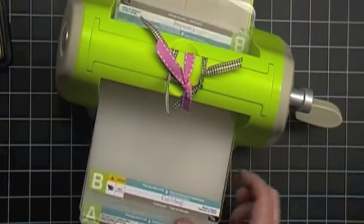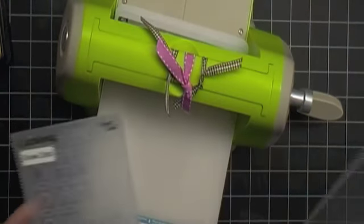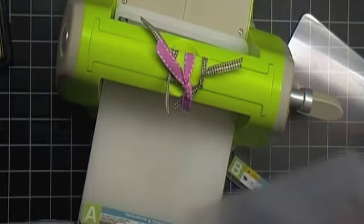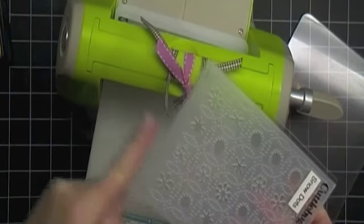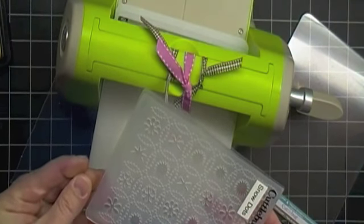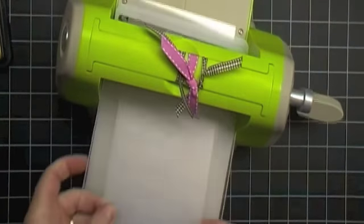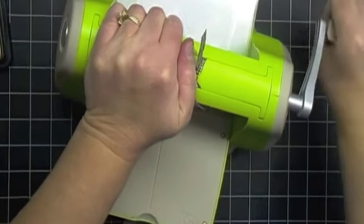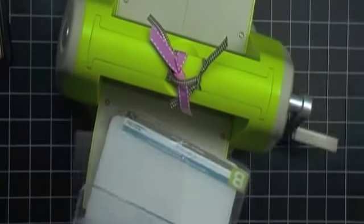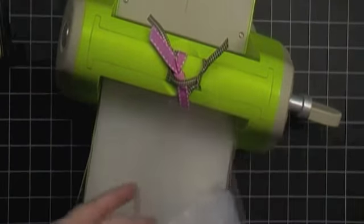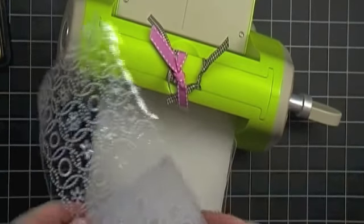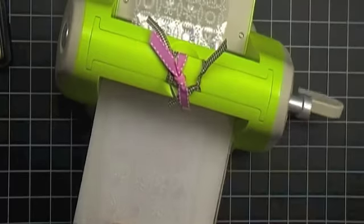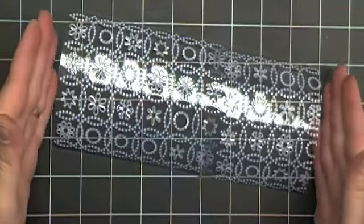Okay, I have my Cuttlebug ready to go. I've got my A plate, my B plate, and my second B plate. The embossing folder I'm going to be using is Swiss Dots. And I'm going to go ahead and just put my plastic in there the long way. So my plastic is long in this direction. And I'm just going to center it. Put it on there. Sandwich my B plate on there. And run it through the Cuttlebug. Now I'm going to flip it around and do it the opposite direction.